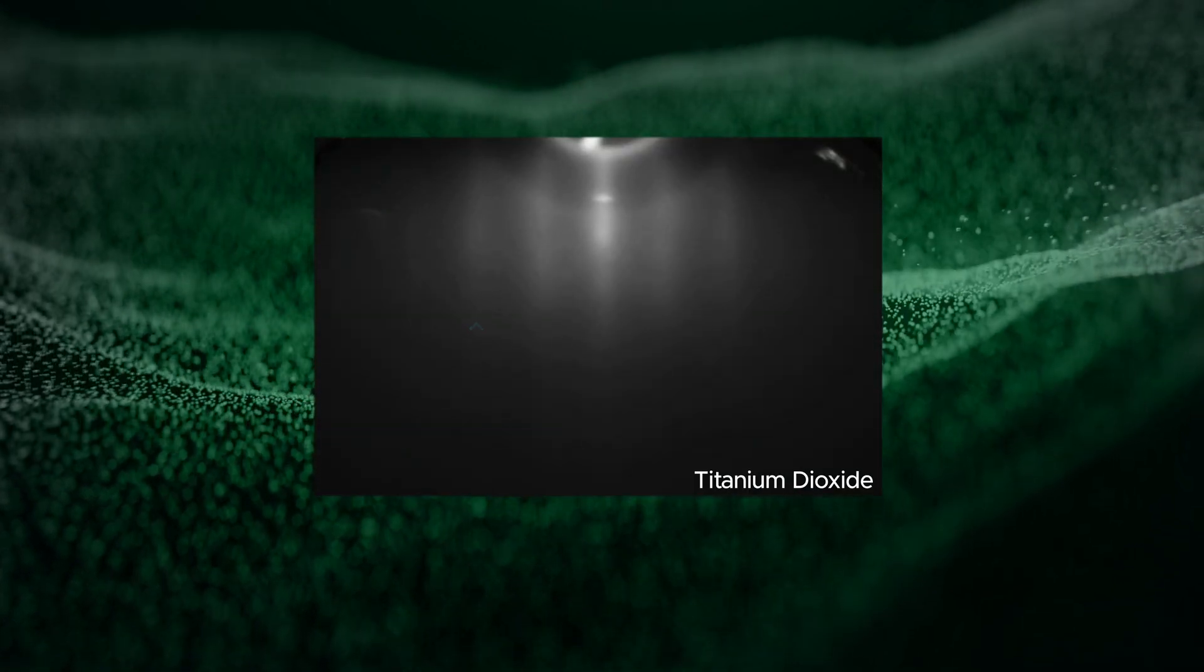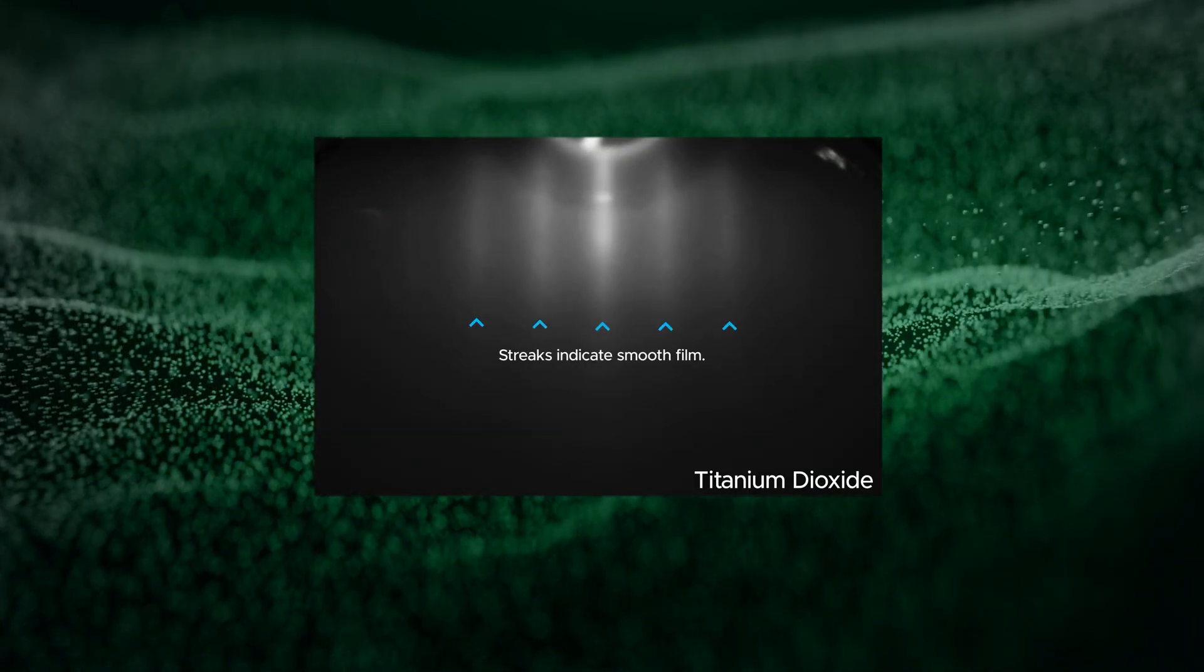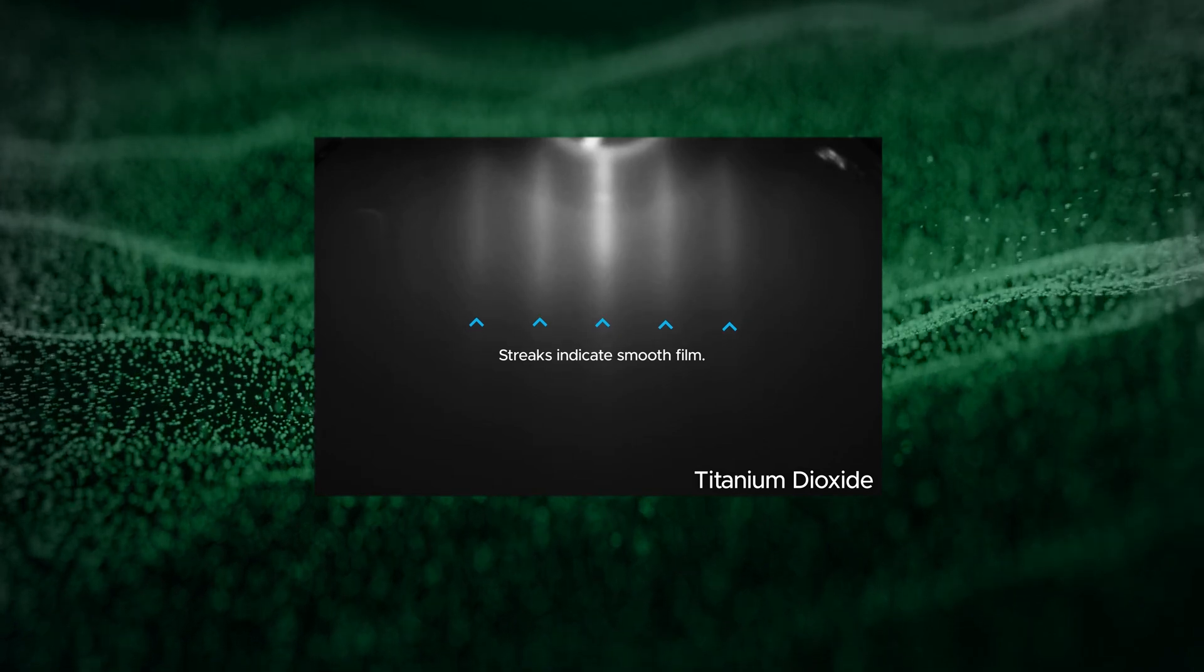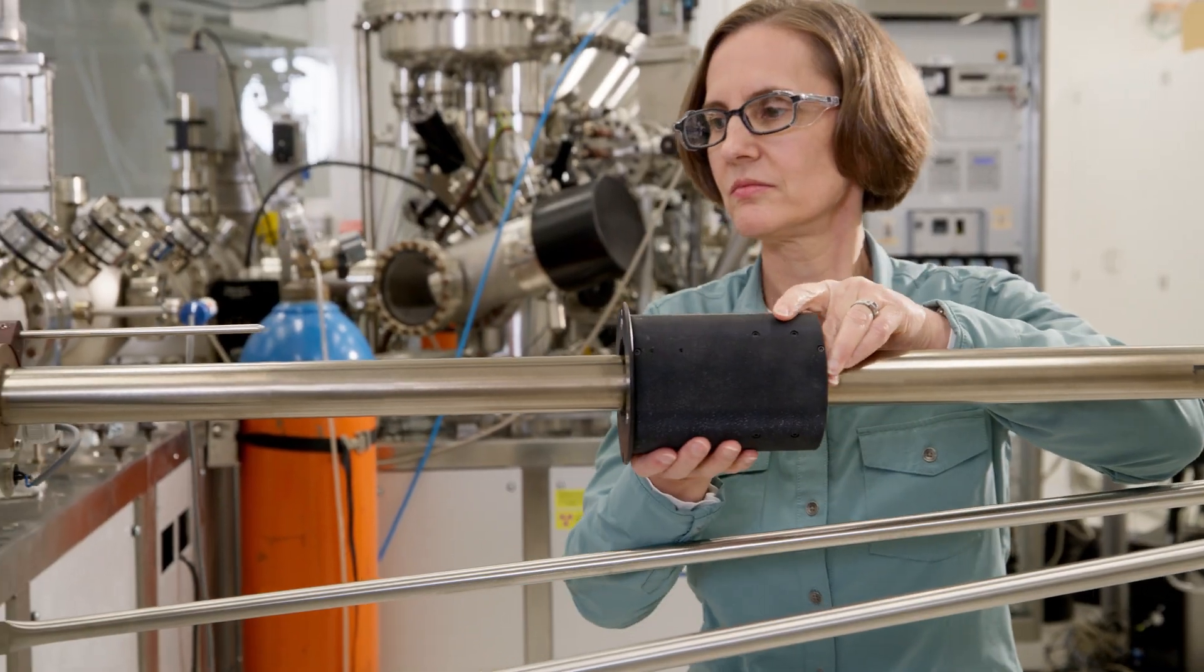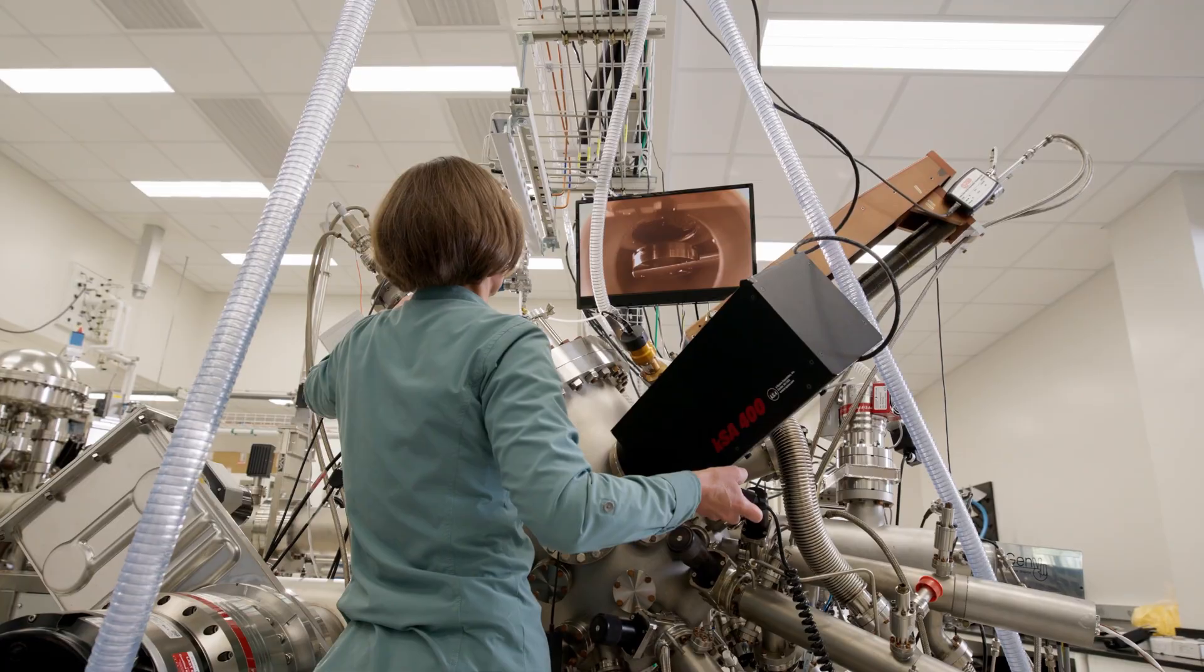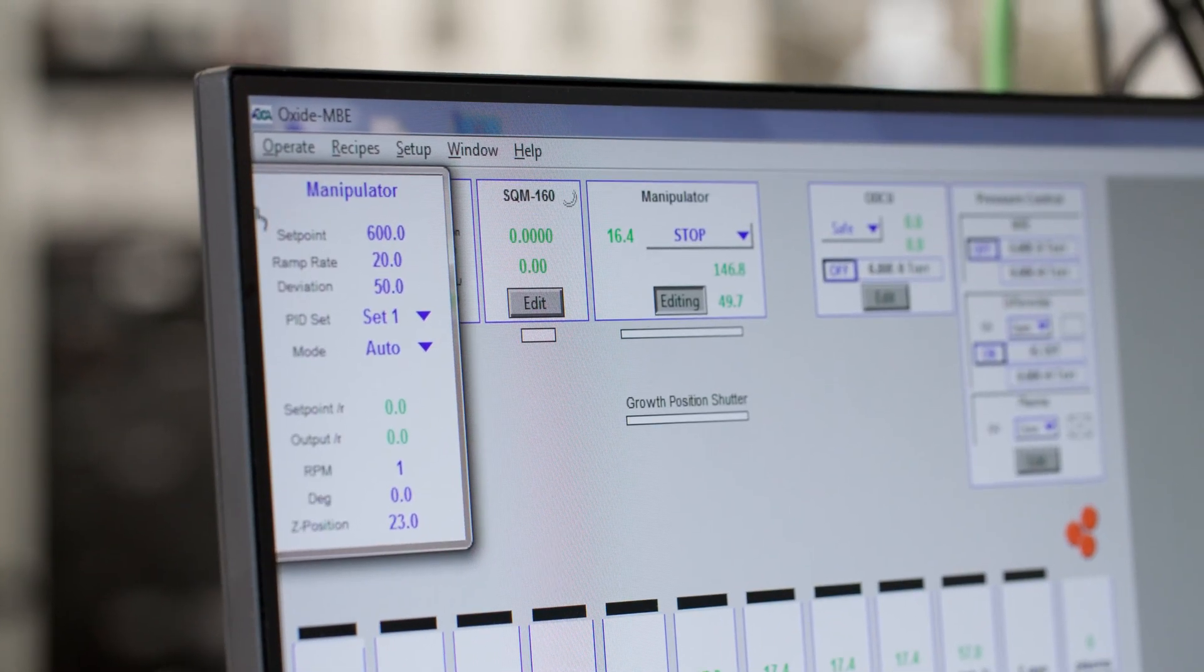You're looking at the growth of a super thin film of titanium dioxide. Researchers are guiding its growth by adjusting parameters like temperature and oxygen pressure. The researchers want to understand how to create high-quality, thin materials like this.